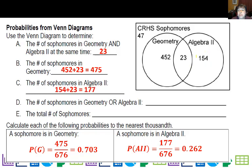Same thing applies for Algebra 2. We actually have to include both these numbers. It's 154 and 23. Now if I say Geometry or Algebra 2, I'm actually talking about these three numbers here. So 452, the 23, and the 154, which means 629. The total number of sophomores are those 629 plus the 47 that are not in Geometry or Algebra 2.